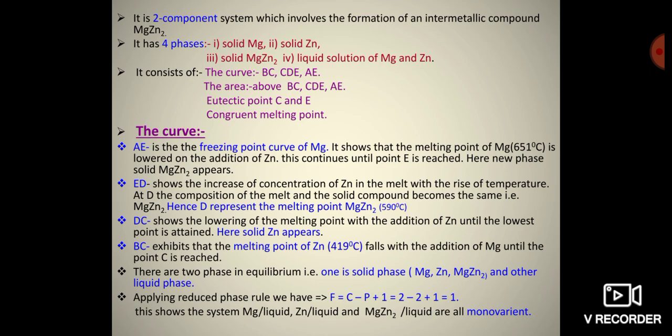Applying the reduced phase rule, we have F = C − P + 1 = 2 − 2 + 1 = 1. This shows that the systems Mg-liquid, Zn₂-liquid, and MgZn₂-liquid are monovariant.